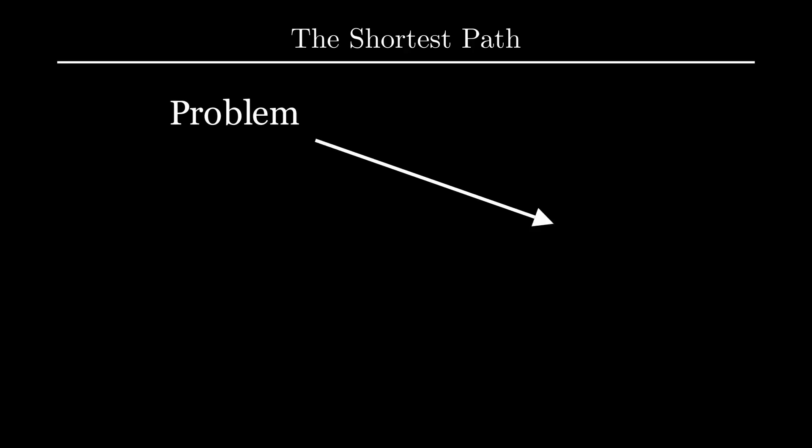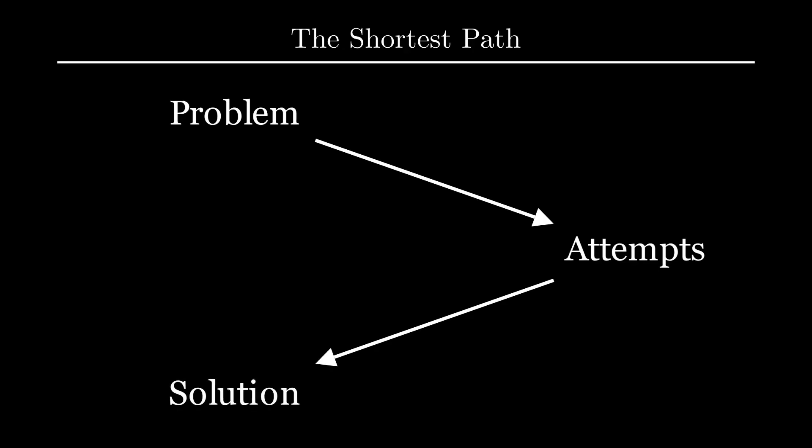Welcome back, or if you're new, just welcome. To find the shortest path we're going to start with a problem, make a few attempts that might not work, but will help us get towards our goal, and then we'll come up with a solution. I'll give you the code for all the methods, but you might think: why not just jump straight to the solution? Looking at ways that don't work gives you intuition on how the way that does work actually works.